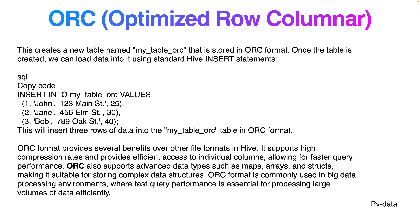ORC format provides several benefits over other file formats. It supports high compression rates and provides efficient access to individual columns, allowing faster query performance. ORC also supports advanced data types such as maps, arrays, and structs, making it suitable for storing complex data structures. ORC format is commonly used in big data processing environments where fast query performance is essential for processing large volumes of data efficiently.